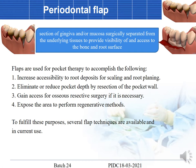Tissue surface flaps are used for pocket therapy to accomplish the following: first, to increase accessibility to root deposits for scaling and root planing; second, to eliminate or reduce pocket depth by resection of the pocket wall; third, to gain access to areas of bone for resective osseous surgery; and fourth, to expose areas for regenerative procedures such as placement of bone grafts and membranes. Several flap techniques are available and currently in use.